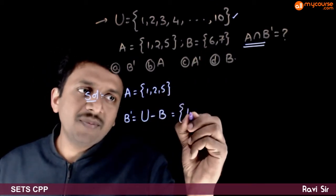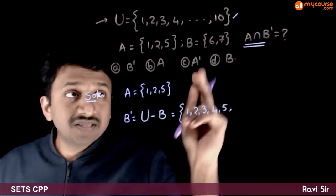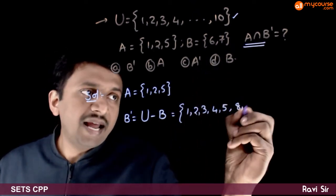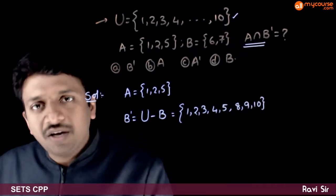So if you remove those elements, you get 1, 2, 3, 4, 5. 6 will not come, 7 will not come. 8, 9, and 10. So this is B complement.